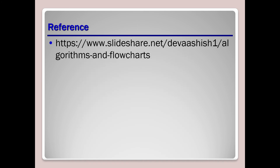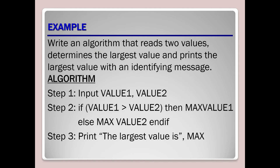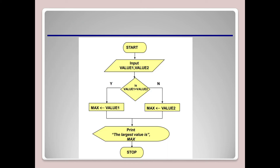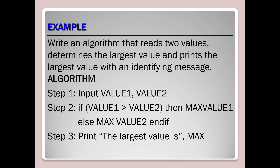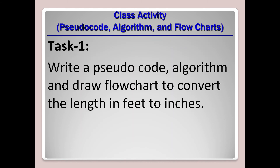So now we have covered how to convert any given programming problem into an algorithm and then into a flowchart. These two steps come before coding. After applying these two techniques, you can easily transform your flowchart or algorithm into code using your chosen programming language.